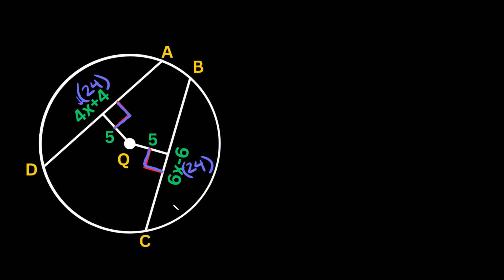Now that we know the chord lengths, we draw a straight line from the center to one of the endpoints of a chord, forming a right triangle. The short side is 5. The full chord is 24, so half of that is 12 for the base. The hypotenuse — the radius — is what we're solving for, so we'll label it C.